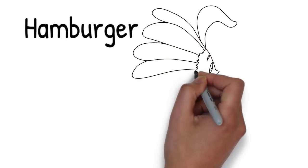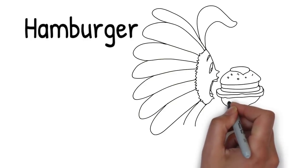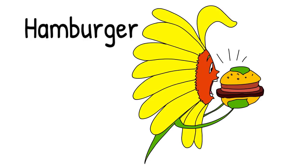The flower is feeling hungry and starts eating a juicy hamburger. The burger has a delicious beef patty and a golden bun. It probably weighs more than the flower but it's too good to resist.